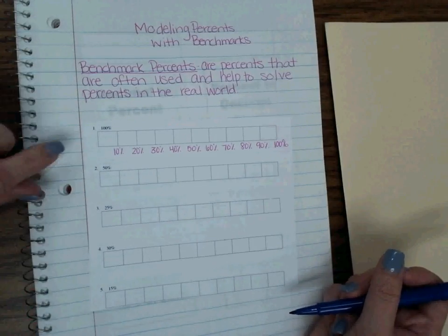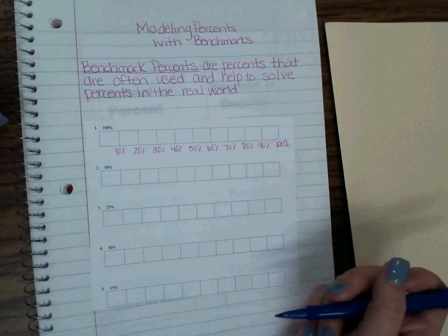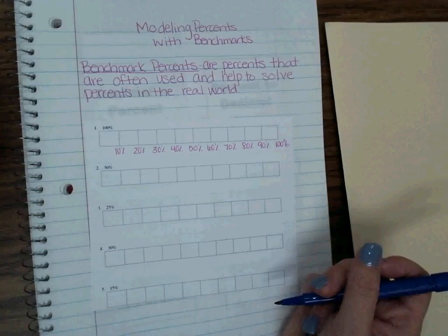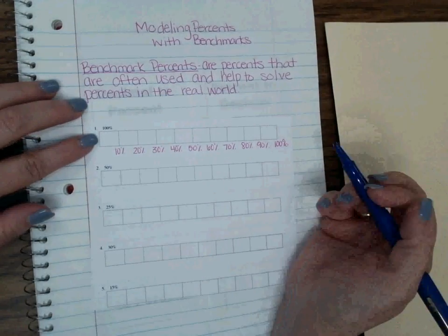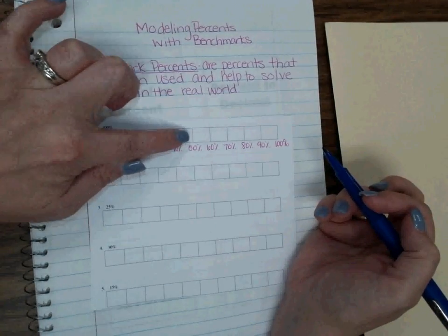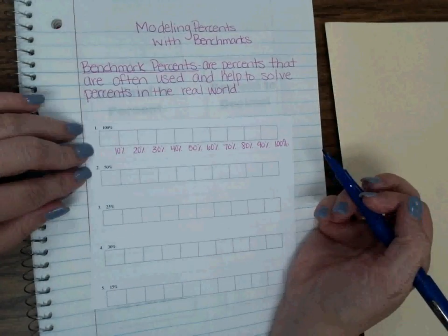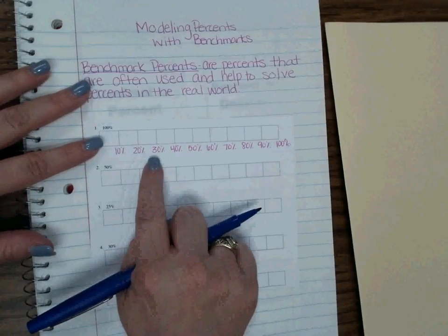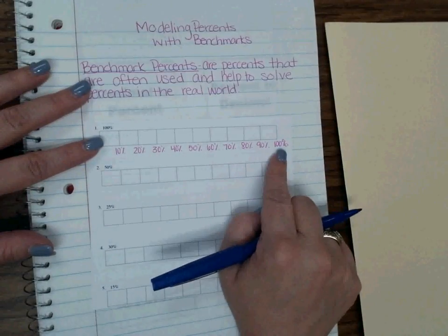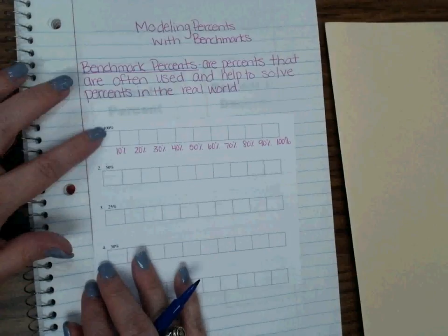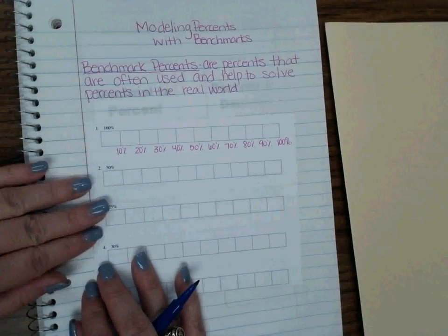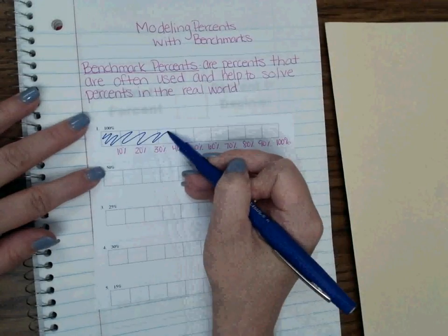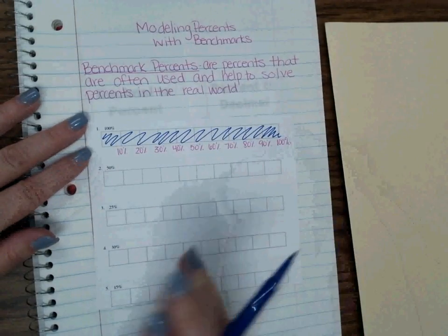This first one is 100 percent. What is 100 percent of anything? It's the whole piece. It's the whole piece. So it would be marking the entire bit. Notice that these are broken up into parts. There are 10 sections. So each of those sections is 10 percent. So I've labeled 10, 20, 30, 40, 50, 60, 70, 80, 90, and 100. Those are good benchmarks because we can use that 10 percent to get us to a lot of places. So if it's 100 percent, I'm going to shade that whole thing in.